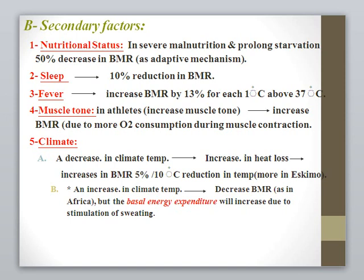If there is infection, BMR is increased by 13% for each 1 degree elevation of temperature. Muscle tone in athletes shows increased BMR due to increased oxygen consumption during muscle contraction. Climate: a decrease in environmental temperature increases heat loss and increases BMR by 5% for each 10-degree reduction in temperature. For example, in Eskimos there is low temperature, but increased BMR to produce more heat and compensate for cold weather. In Africa, where temperature is high, BMR is reduced to decrease heat production.